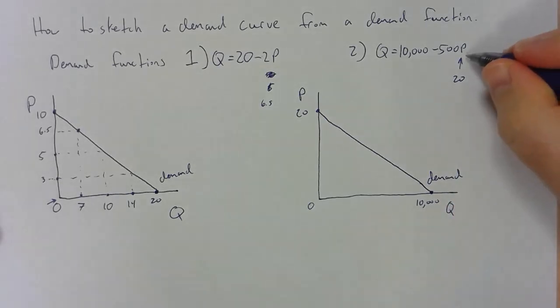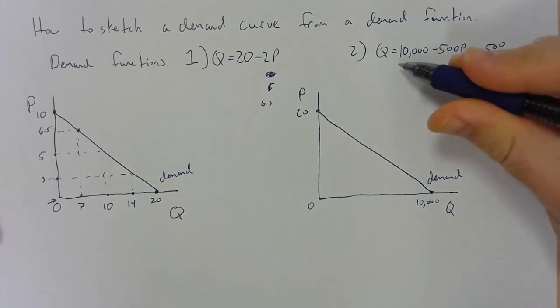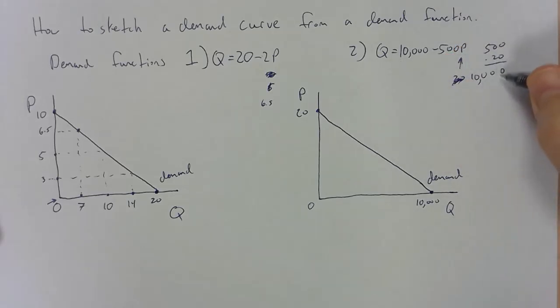Just to clarify or to support that, 500 times 20 equals 10,000. You can see that if price is equal to 20 and for every dollar increase in price, quantity is going to go down by 500. You would see that we would only need to increase that 20 times in order to get 10,000 and quantity would end up being zero. So that's why it's our intercept.